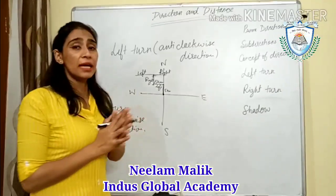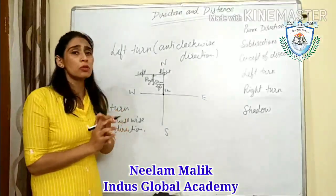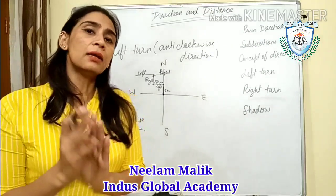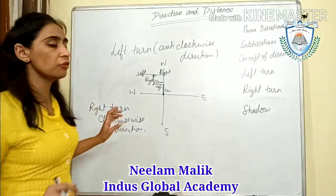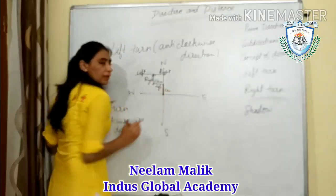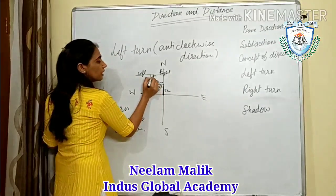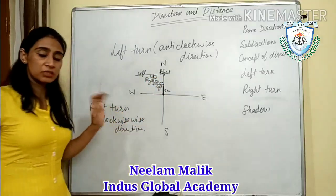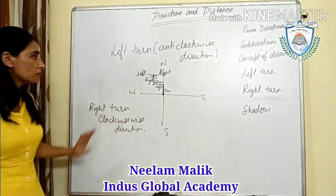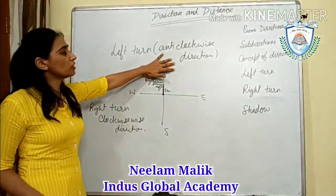Sometimes they will tell you about angles — you have to move 45 degrees or 90 degrees. If no degree is mentioned, by default you take 90 degrees. If 45 is mentioned, then you move 45 degrees. Right means clockwise direction and left means anticlockwise direction.